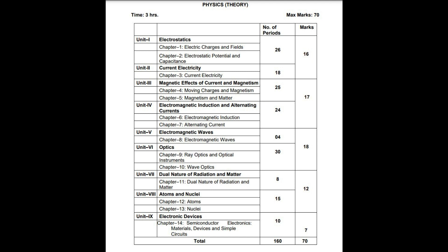Current electricity is also included in Unit 1-2, and electrostatics with current electricity together are 16 marks. Similarly, Unit 3 covers magnetic effects of current and magnetism — moving charges and magnetism, and magnetism and matter. Unit 4 covers electromagnetic induction and AC current. Units 1 and 2 have more content than Units 3 and 4, and higher weightage.